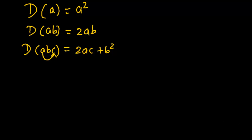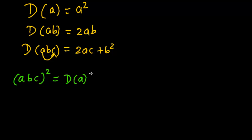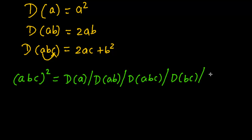Rather than going with theory, we will work with examples. But we just need to note the general form to determine the square of any 3-digit number. For abc squared, where abc is some 3-digit number like 123, the answer is given by five parts: d(a), d(ab), d(abc), d(bc), and d(c). Your answer will contain these 5 parts.